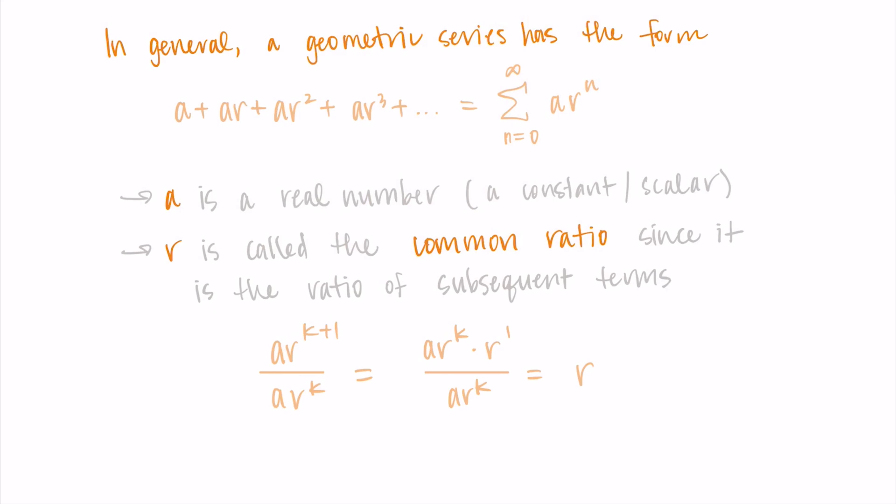As a comment too, both a and r should be non-zero. If they were zero, we wouldn't really have a sequence to deal with, so we just assume that a and r are non-zero.